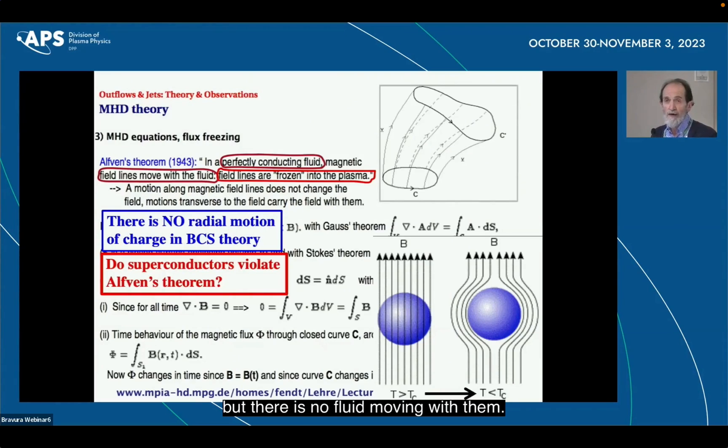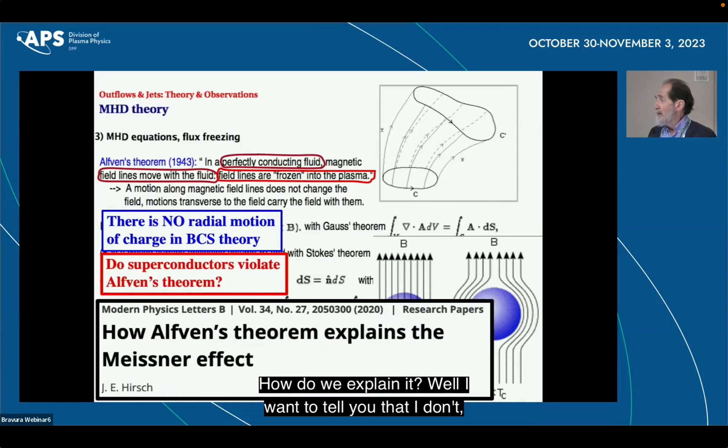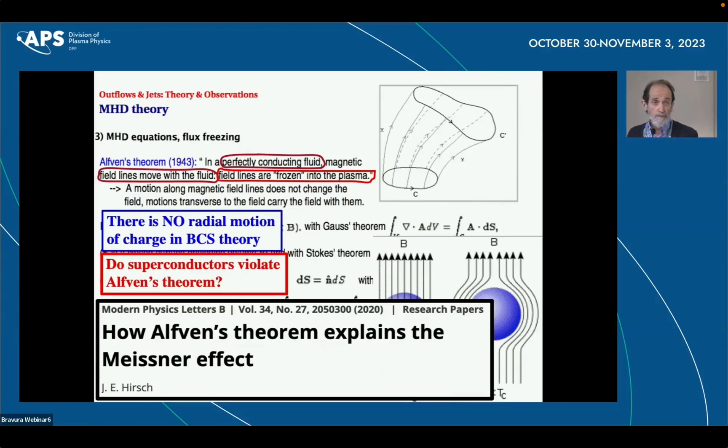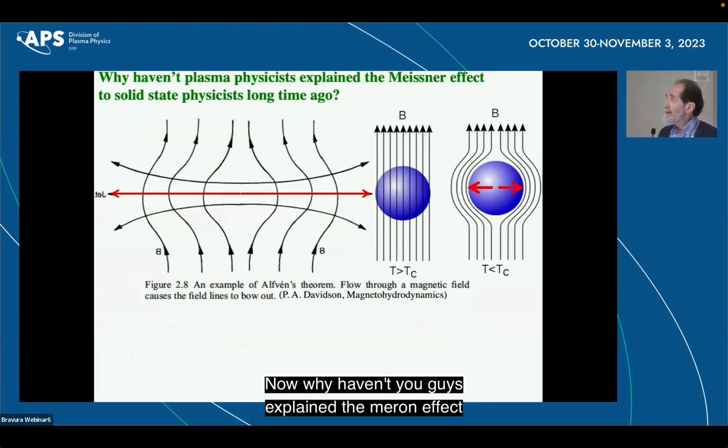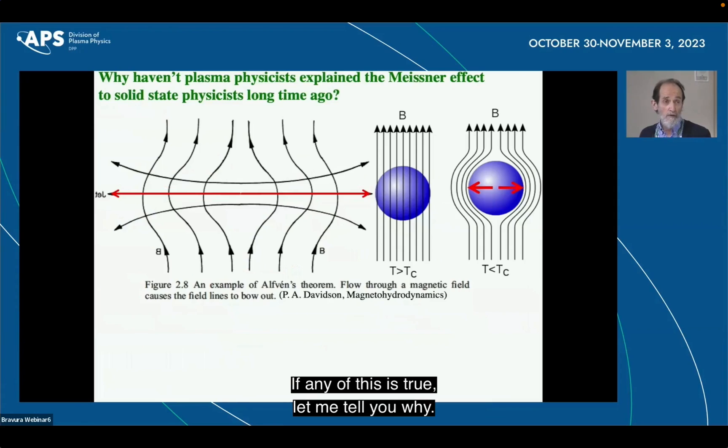So if BCS theory says that there is no radial motion here, so do superconductors violate Alfven's theorem? Because the lines move out, but there is no fluid moving with them. I mean, what about this? I mean, it's a very good conductor becoming a superconductor. How do we explain? Well, I want to tell you that I think that Alfven's theorem in fact is not violated, that in fact Alfven's theorem explains the Meissner effect. Now, why haven't you guys explained the Meissner effect to solid state physicists long time ago, if any of this is true? Let me tell you why, I think.